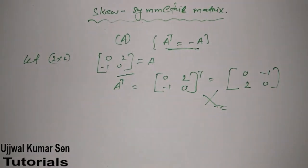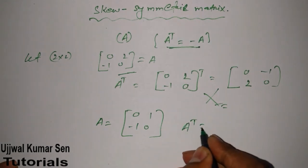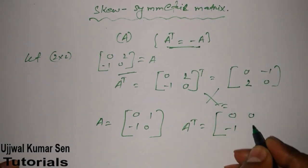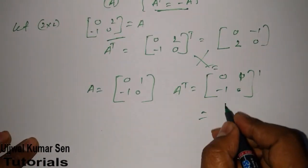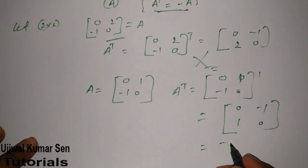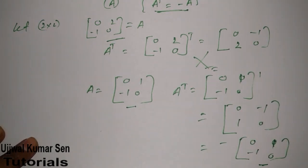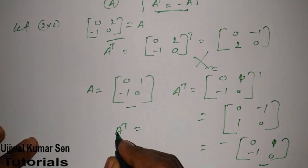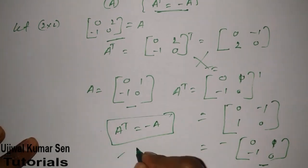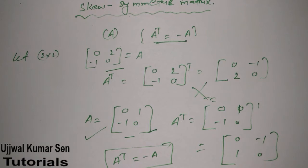So when will a matrix become skew symmetric? Suppose A is equal to [0, 1; -1, 0]. Now do the transpose: rows become columns, giving [0, -1; 1, 0]. Take the minus sign outside and we get [0, 1; -1, 0], which is equal to A. Therefore A transpose equals minus A is valid here, meaning this matrix is known as a skew symmetric matrix.